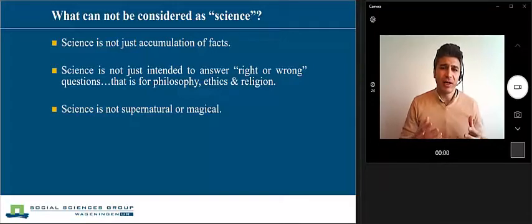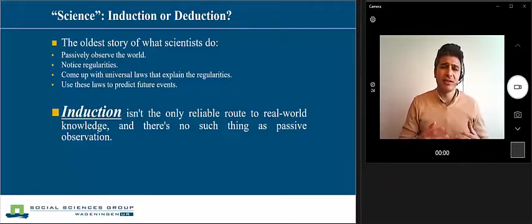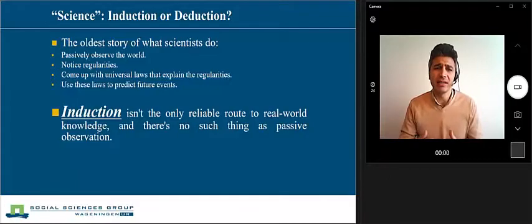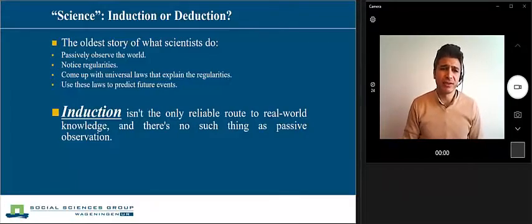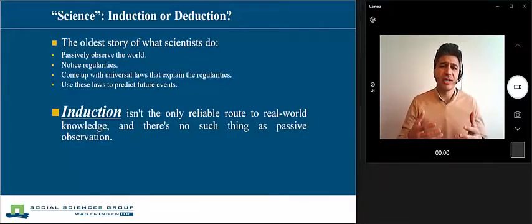Is science induction or deduction? Actually, the oldest story of what scientists did was that they passively observed the world, then they noticed some regularities, and then based on these regularities they came up with some universal laws that explain these regularities, and then eventually they used these laws to predict future events. That is induction. But induction isn't the only reliable road to real-world knowledge, and there is no such thing as passive observation. That is why now scientists mostly focus on deductive approaches.